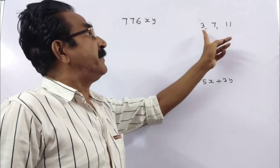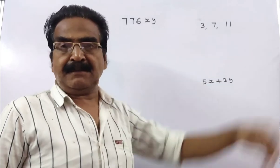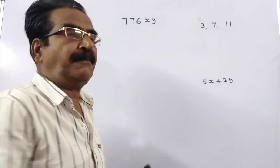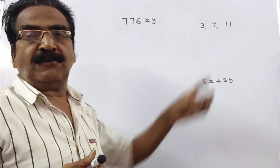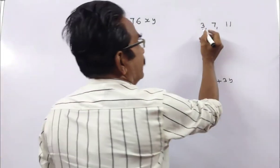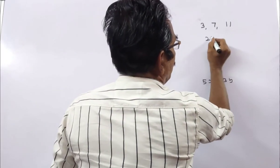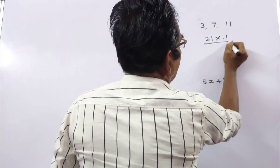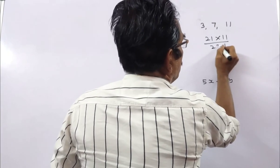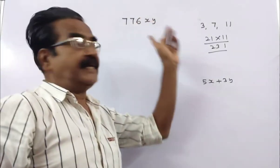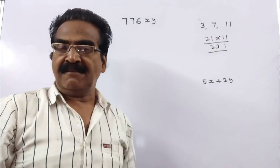Friends, this number is divisible by 3, 7, and 11 means this number is definitely divisible by the LCM of 3, 7, 11. The LCM of 3, 7, 11 is 3 times 7 is 21, into 11 is 22, 231. So this number must be divisible by 231.